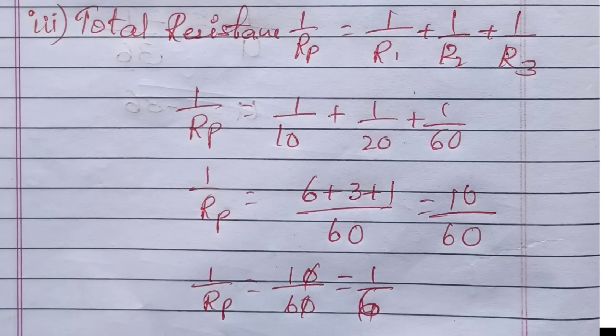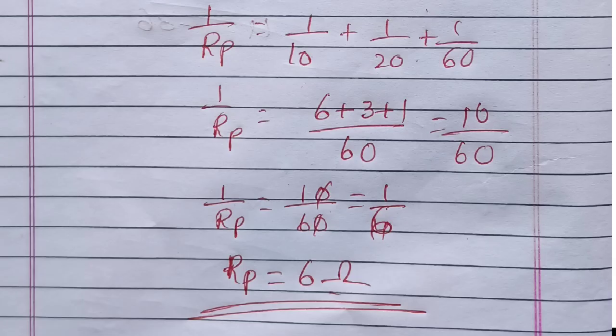60 plus 6 plus 3 plus 1 divided by 60, so 10 by 60, 0 is to cancel. 1 by Rp equals 1 by 6. So Rp equals 6 ohm. This is equal to total resistance.